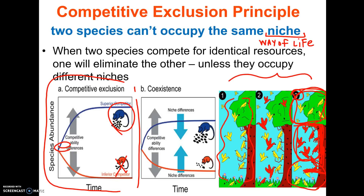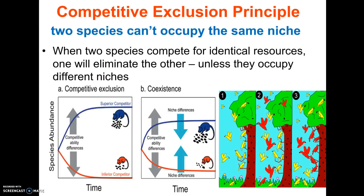So that's resource partitioning. The rule is that two species cannot occupy the same niche. This picture of birds is not breaking the rule because they are not occupying the same niche.